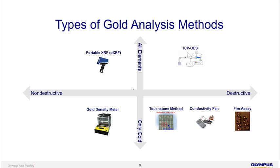Fire assay is a very well-known method in the industry. It is a destructive method — very tedious and must be done in a laboratory by skilled personnel. You cannot get results in real time. The gold needs to be digested by acid, so you will not be able to recover your gold. However, fire assay will give you an accurate reading of gold purity. The limitation is that fire assay is only meant for precious metals — it won't give you readings on copper, zinc, or nickel. You will only get the concentration of gold.